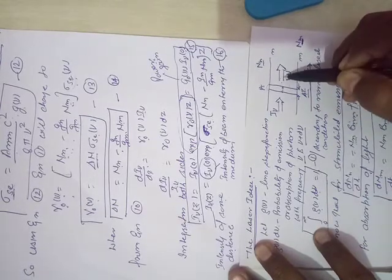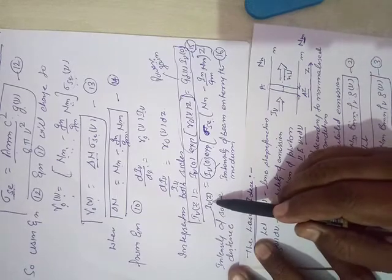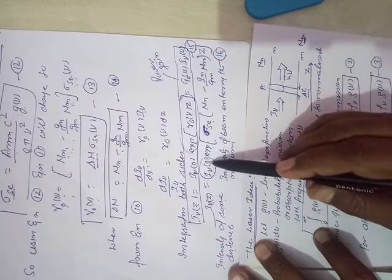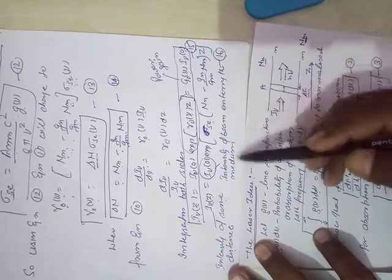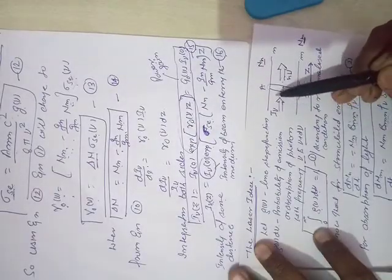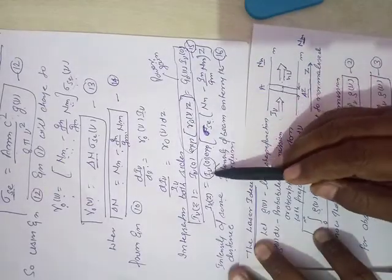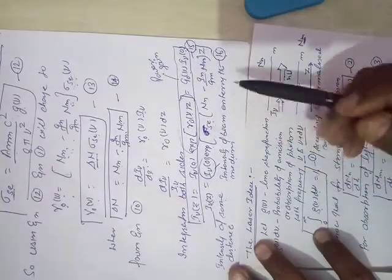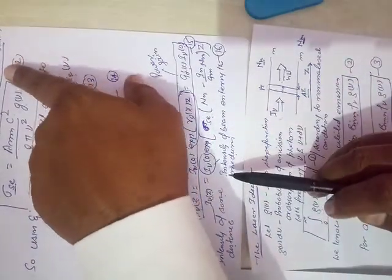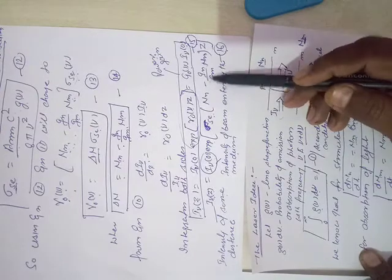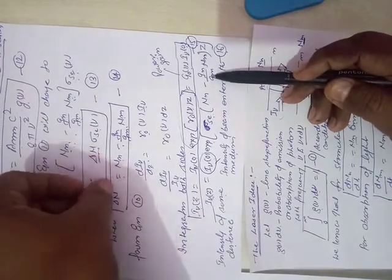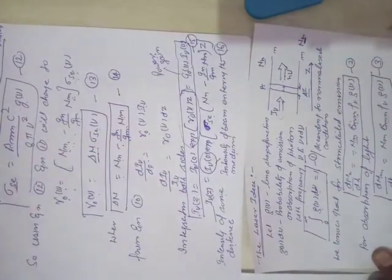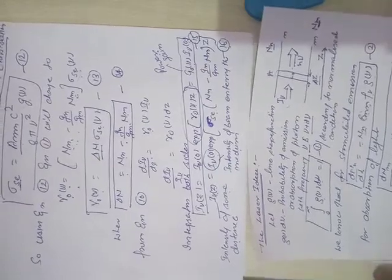From equation number 16, we are using two types of intensity: intensity at some distance, let me explain with the help of a diagram. The beam is propagating in the z direction with area of cross-section. After traveling z distance, the intensity changes. The original intensity of this medium equals exponential of sigma SE, where sigma SE is nothing but the stimulated emission cross-section.